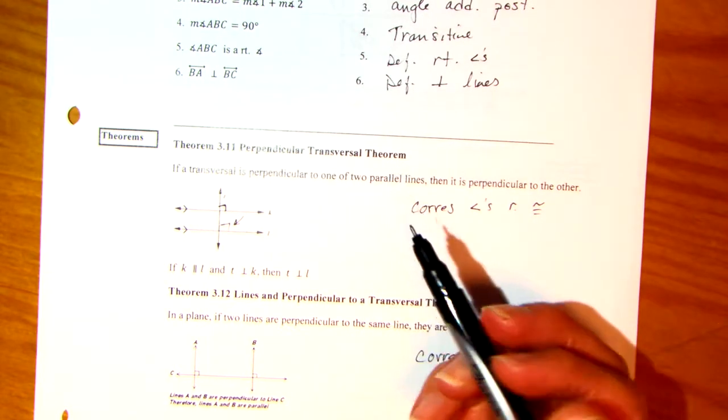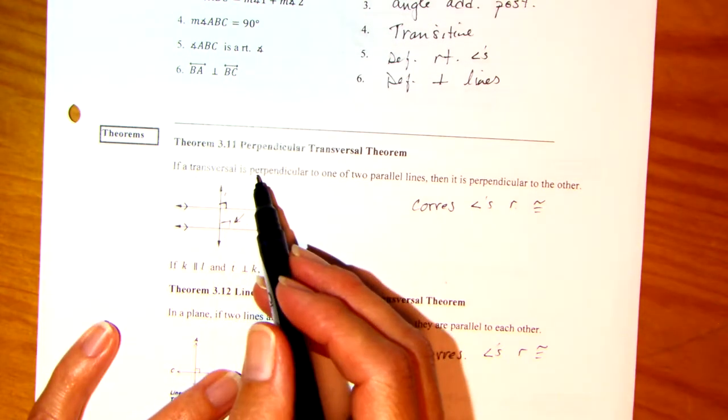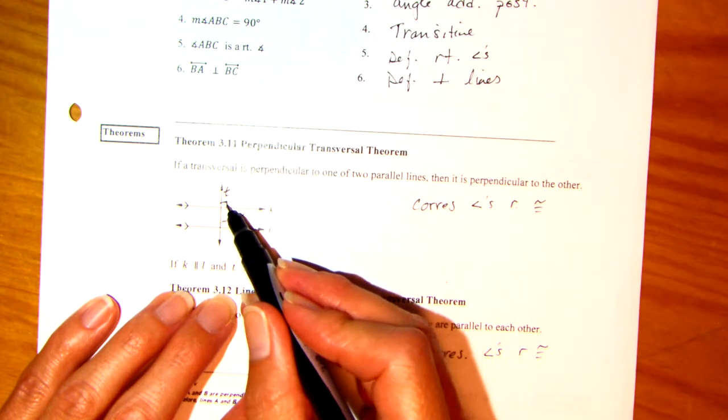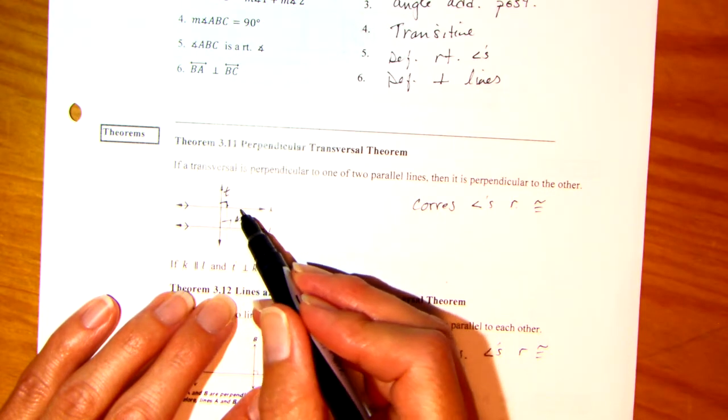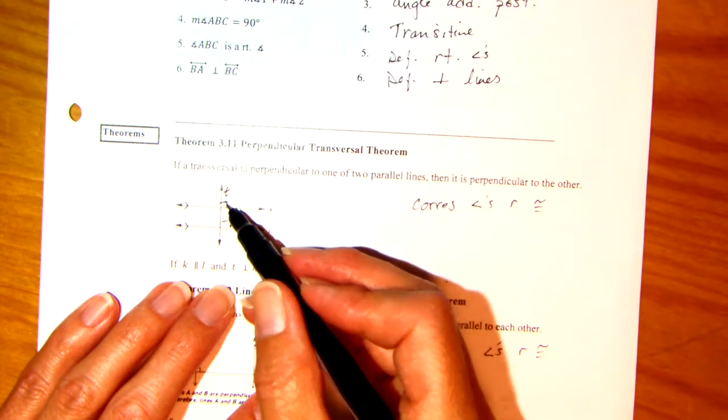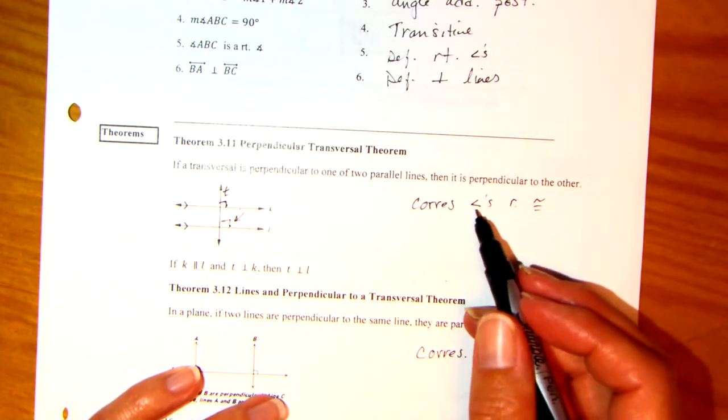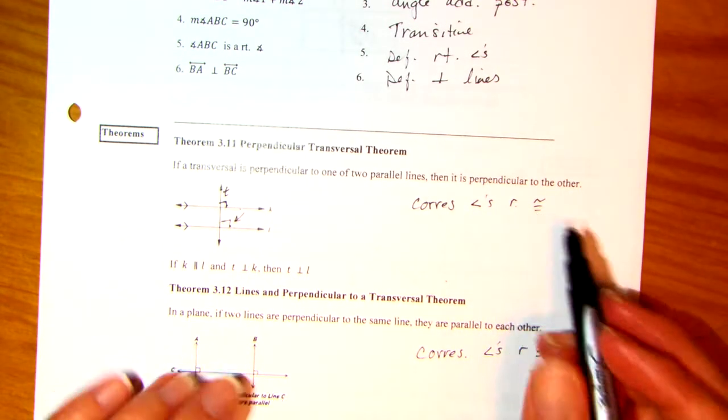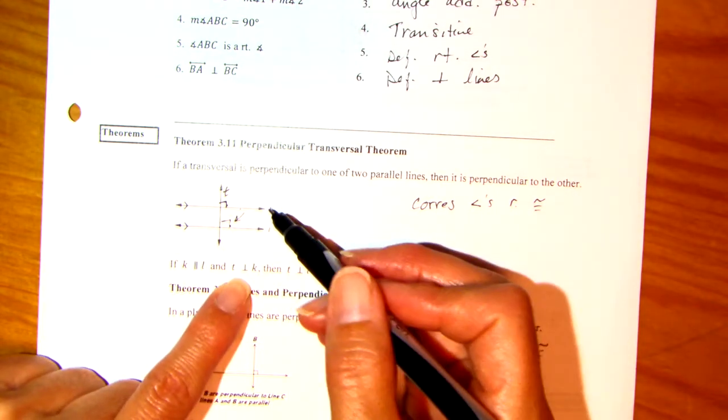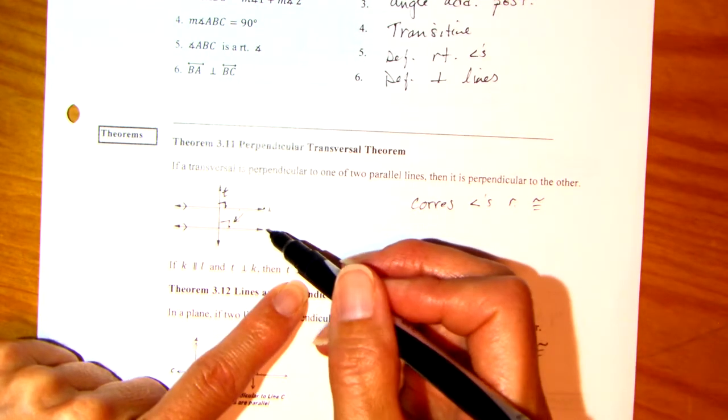Perpendicular transversal theorem. Okay. So if you have perpendicular lines and a transversal, blah, blah, blah. Okay. Here we go. If a transversal, okay, this is our transversal T, is perpendicular, right here, to one of the parallel lines, then it's perpendicular to the other. Why? If you have parallel lines and these two angles are congruent, they're corresponding angles, then you have parallel lines. Okay. So basically we're using corresponding angles are congruent. So again, if K is parallel to L, and K is perpendicular to T, then L is perpendicular to T.